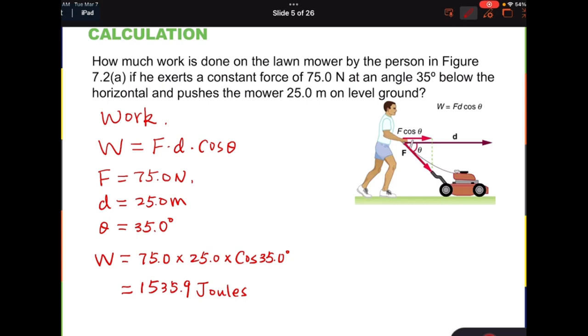The other thing you have to consider is the significant figures. In this problem you are given 75.0 which is three figures. And 25.0 which is also three figures. But then the angle here is 35 degrees which is two figures. So the answer always has the same figures as the least figure numbers. So that's why we have to use two figures. And that's why the answer is supposed to be 1.5 times 10 to the third joules. And this is the answer to this problem.